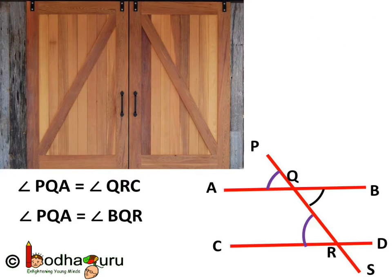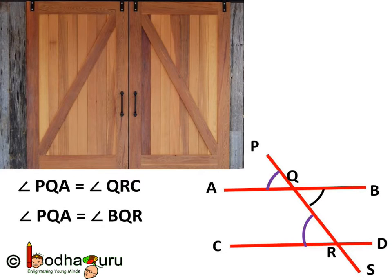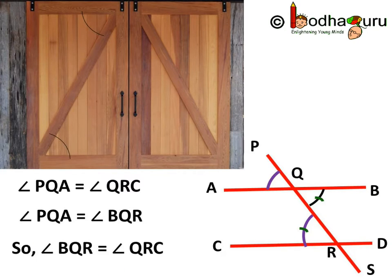Now you might also remember that vertically opposite angles are equal. Angle PQA and angle BQR are vertically opposite angles, and they are equal. So we get angle PQA is equal to angle QRC, which is equal to angle BQR.